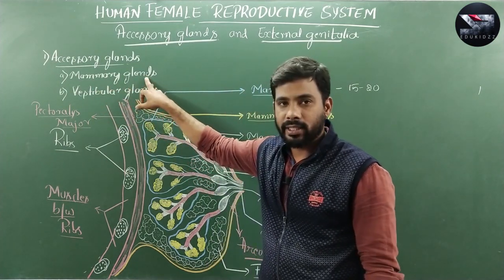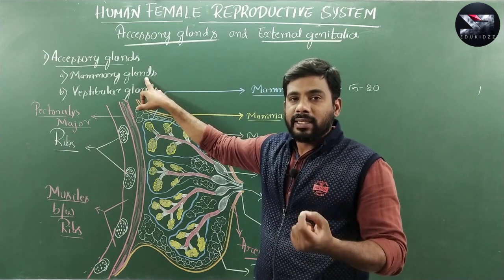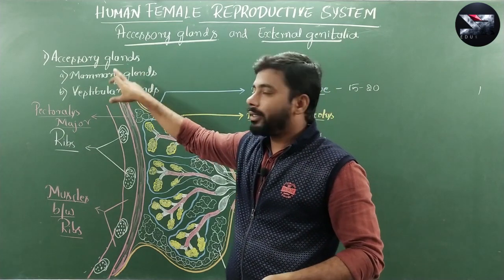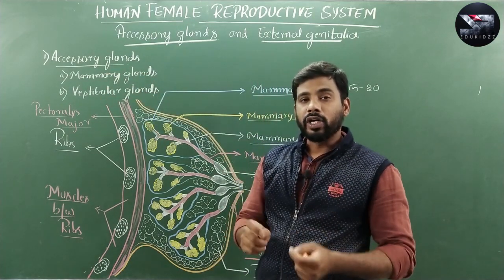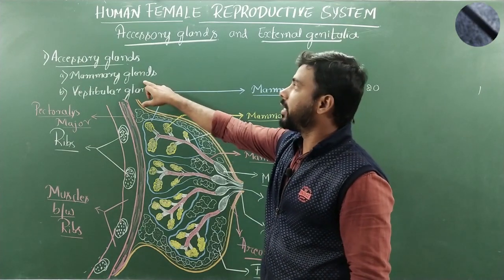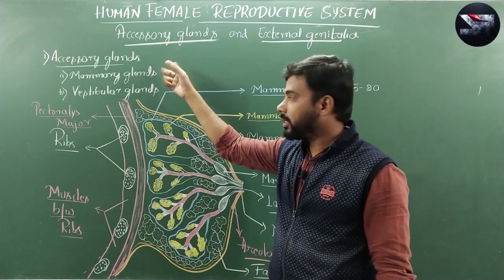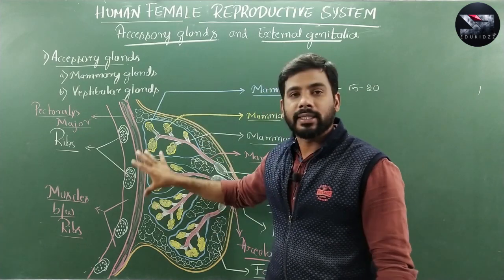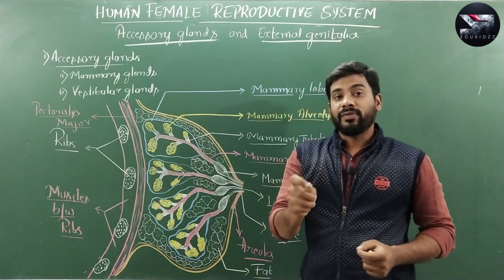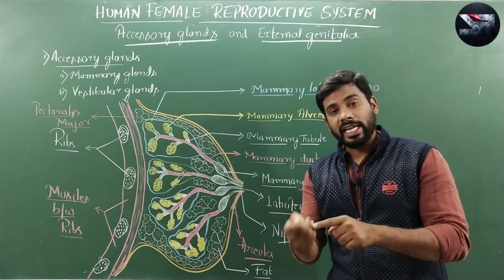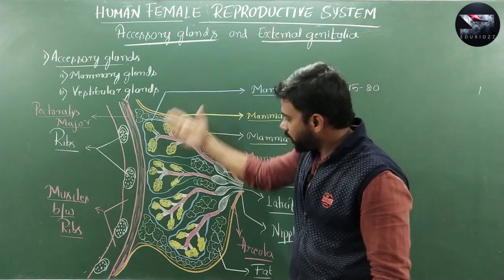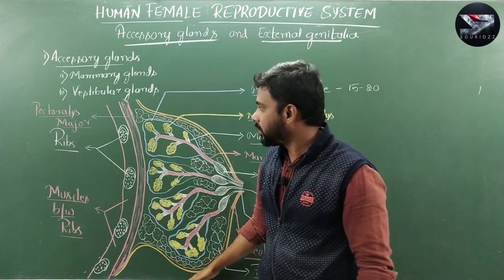The presence of mammary glands is the characteristic feature of all mammals, but these mammary glands are functional only in humans. These glands are considered accessory glands because in the mammary glands the synthesis and secretion of milk takes place, which is very essential for nourishing the baby or infants after delivery.